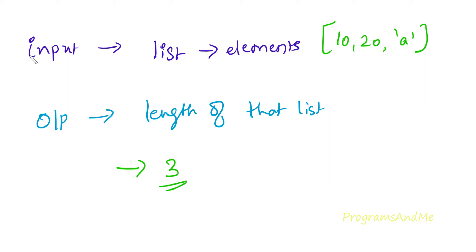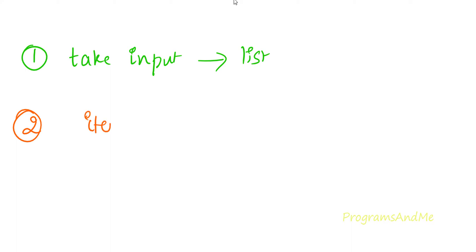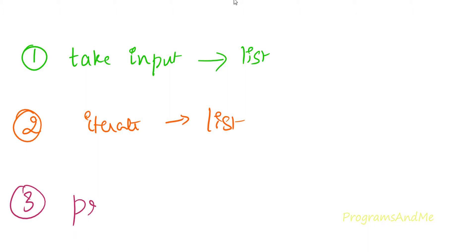So let's see how to do that. To write this program, the first step is to take the input — a list. The second step is to go through each element and count how many elements are present. We need to iterate through the list, count elements, and lastly print the result.